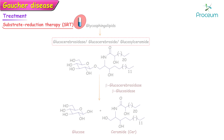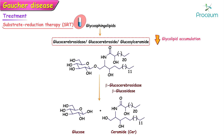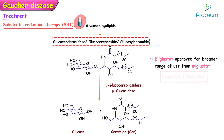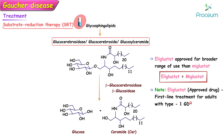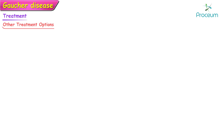Substrate reduction therapy reduces glycolipid accumulation by decreasing the synthesis of glucocerebroside, the substrate of the deficient enzyme, and is an alternative to enzyme replacement therapy for some adult patients. Eliglustat has been approved as a first-line therapy for adults with Type 1 Gaucher's disease and has a broader range of use than miglustat.